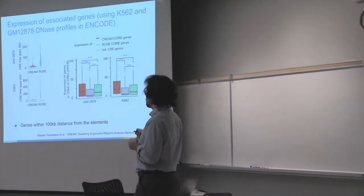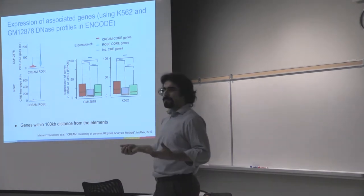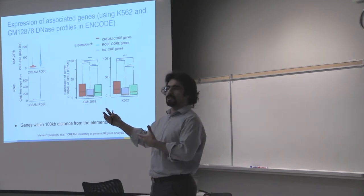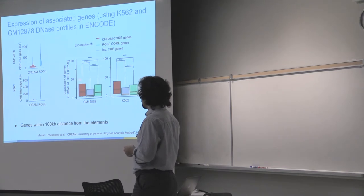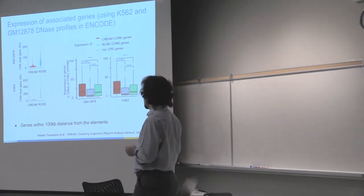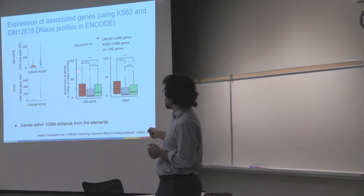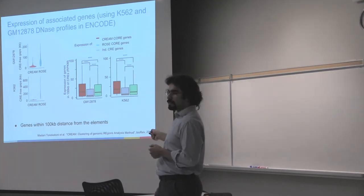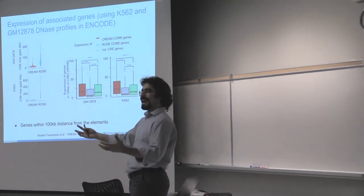Because of that, CREAM actually comes up with a more compact region. But we have to know if this difference is actually functionally more relevant to the biology of the cells. If we get the expression of the genes in proximity of CREAM-identified cores versus ROSE-identified cores and single cis-regulatory elements in both cell lines, we can see that expression of the genes in proximity of CREAM-identified cores is significantly higher with respect to both of them in both cell lines. So far so good—the CREAM-identified cores are in proximity of highly active genes.